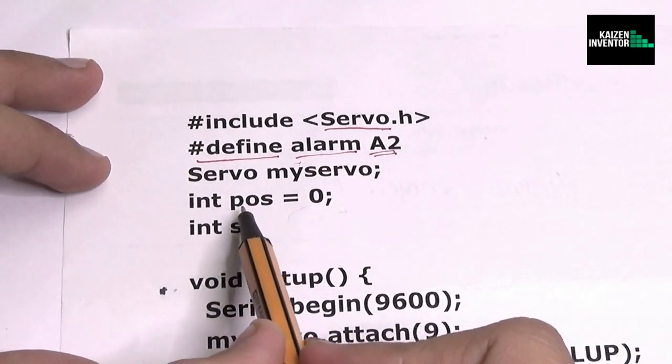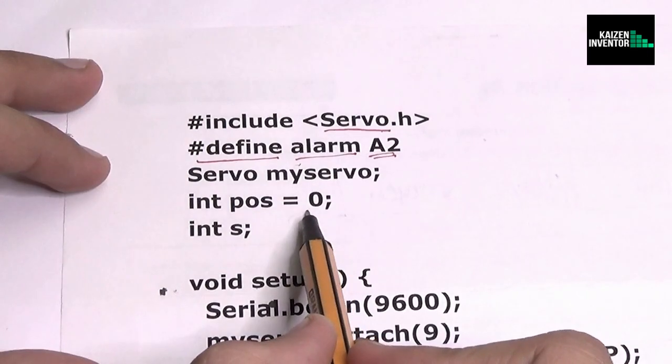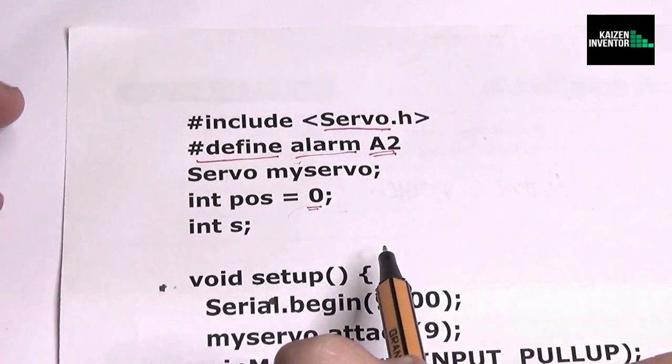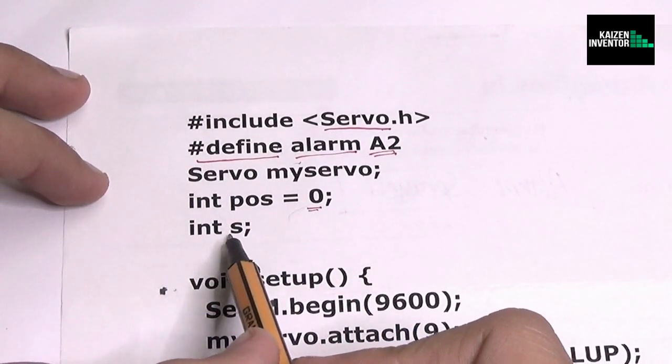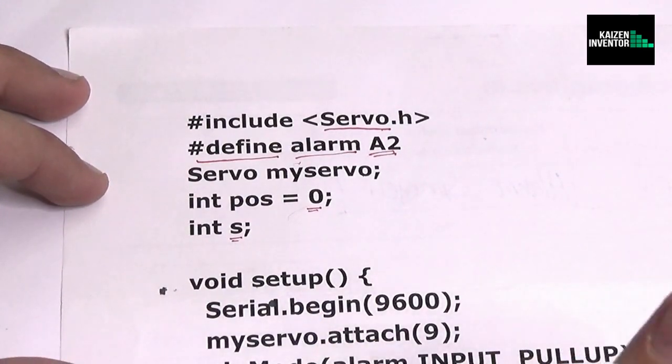Now we create an integer having the position value of zero. Now this zero is in degrees. So it means the starting point of the servo. Also we create another integer named as s. We would understand that in the later part of the code.